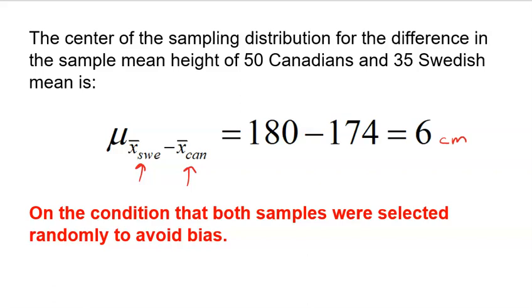I know that not every two samples are going to have that difference. The mean of all of them, which is what this symbol is showing us, should be the truth, as long as our samples are selected randomly to avoid being biased. I specifically went Swedish minus Canadian because I wanted to get a positive difference. The six centimeter is in favor of Swedish men. They are typically going to be taller.